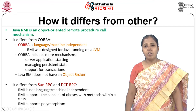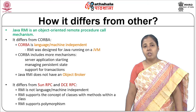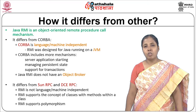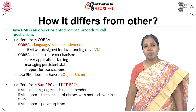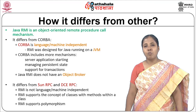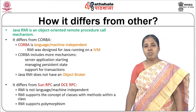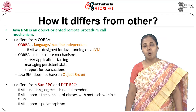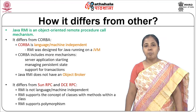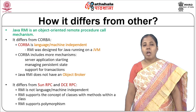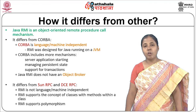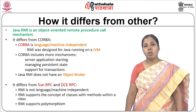Java RMI is an object-oriented remote procedure call mechanism, but it differs from another important competitive technology called CORBA. CORBA is language and machine independent, whereas Java RMI is language dependent, meaning RMI has to be developed using Java. CORBA includes more mechanisms like server application starting, managing persistent state, support for transactions, and CORBA assumes an object broker that handles the remote procedure call mechanisms.